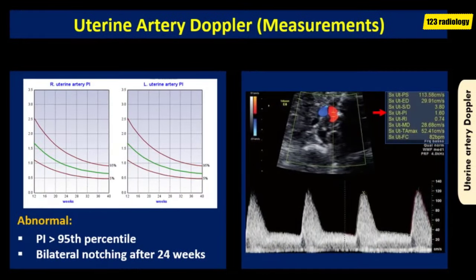The uterine artery pulsatility index is a favored measurement of vascular impedance, because it indirectly includes the presence or absence of early diastolic notch. A normal pulsatility index should be below the 95th percentile for gestational age. An abnormal waveform is characterized by a high pulsatility index above the 95th percentile, or persistence of bilateral diastolic notch beyond 24 weeks. Therefore, uterine artery Doppler can be used to help predict preeclampsia or fetal growth restriction.